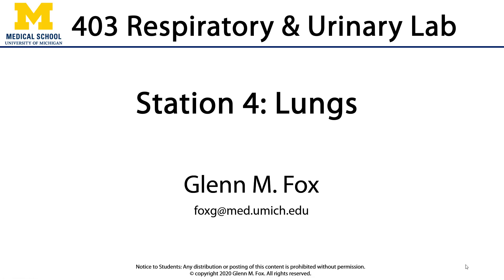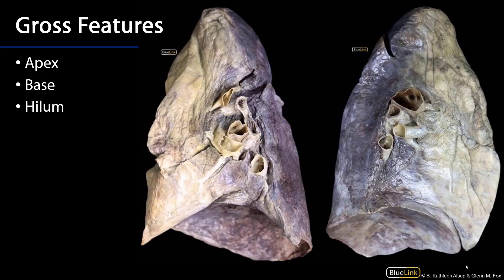Let's talk about the lungs. The lungs are bilaterally paired organs that exist in the pulmonary cavities of the thoracic cavity, surrounded by the pleura. The surface of each lung is going to be covered by visceral pleura.